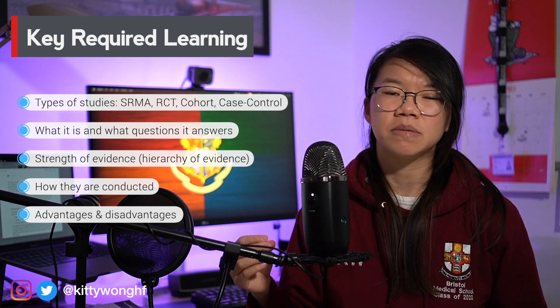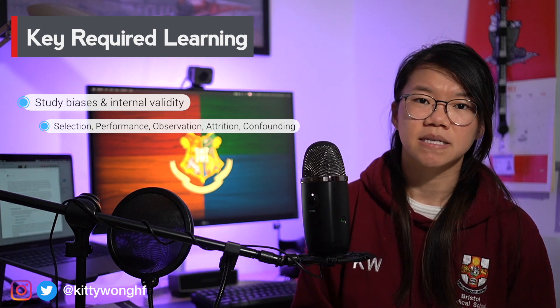You'll almost always be asked to discuss the strengths and weaknesses of a study, so if you're able to rattle off some generic strengths and weaknesses of the study type first, you can buy yourself some time to think about the specific limitations of the study you're reading. Biases is the next big component you need to know off the back of your hand. Systematic bias is defined as anything which impacts the study results in a non-random way, questioning the validity of the results and therefore the study itself — this is also known as the internal validity of a study.